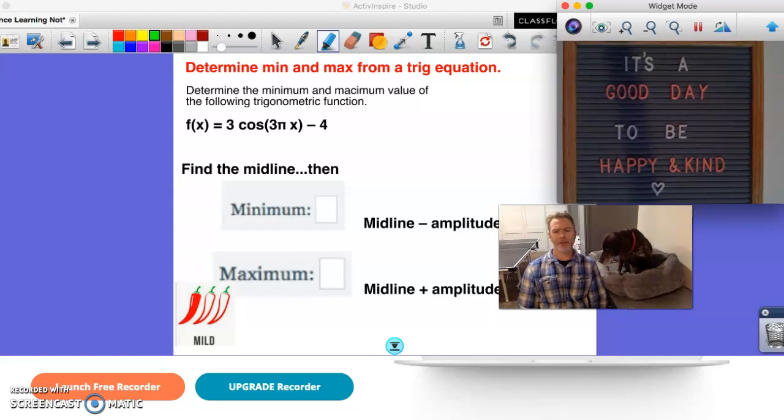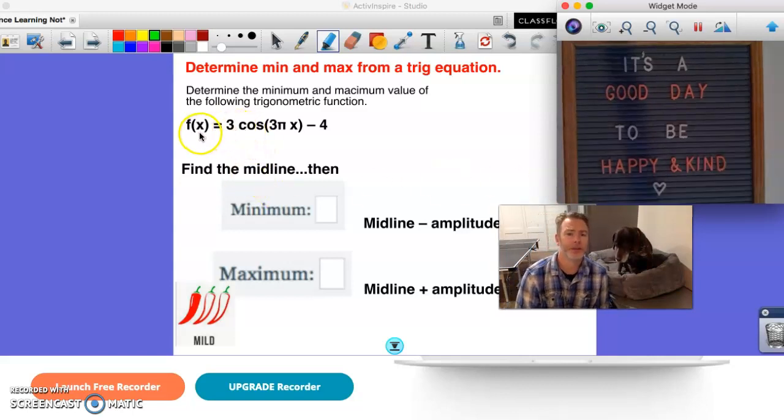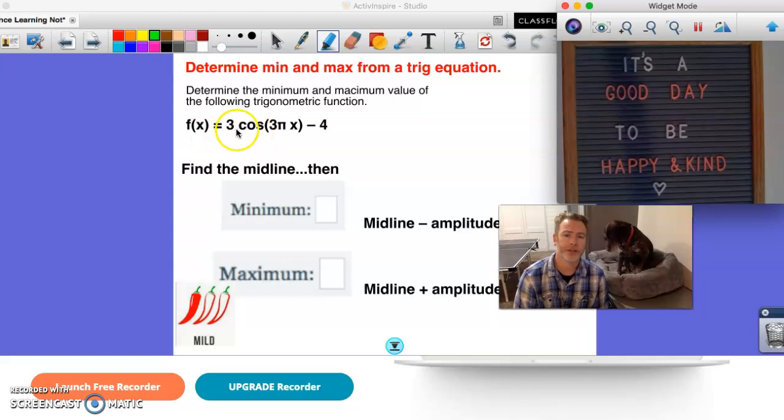To find a high and a low, if you have a graph, it's fairly straightforward. You just look on the graph and determine what that y value is. What we want to do here is do that from an equation, because ultimately we're going to give you an equation and then ask you to graph it.